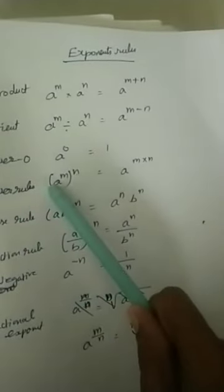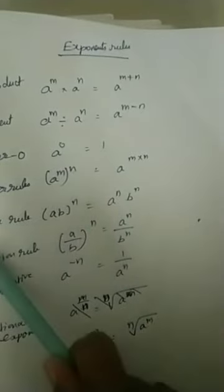Power rule: a power m, whole power n, equals a power m times n.